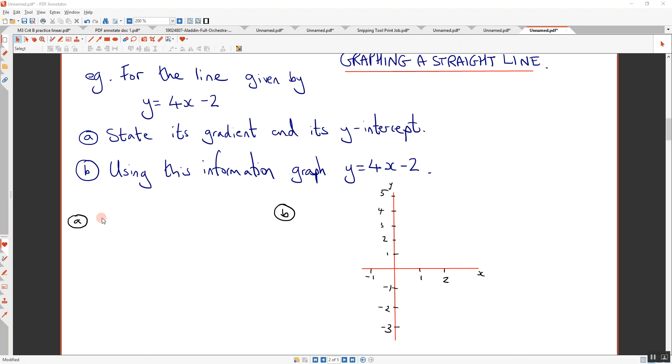Maya? Okay, the gradient is 4. Good. Gradient is 4. What is the y-intercept? Hands up. Zuri? Negative 2. Good. So we've got the gradient, we've got the y-intercept.